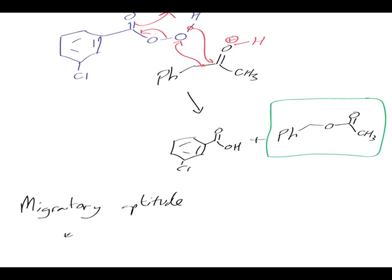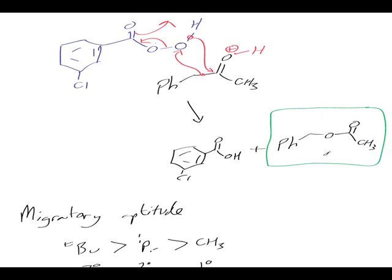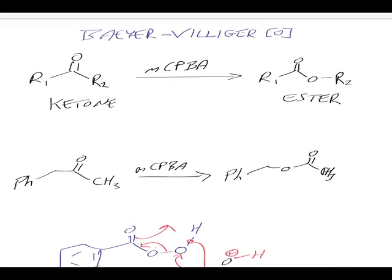So if we look at migratory aptitude, we'll have things like t-butyl, which would be better than isopropyl, which would be better than CH3 — because we have a tertiary carbon versus a secondary carbon versus a primary carbon. And that's migratory aptitude, which really governs how you get certain products in the Baeyer-Villiger reaction.